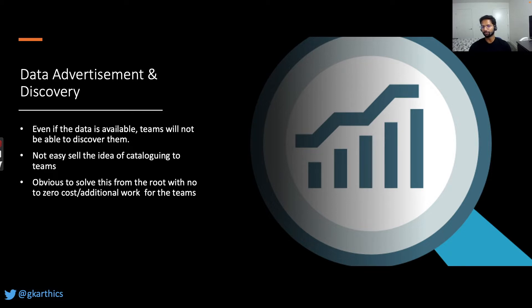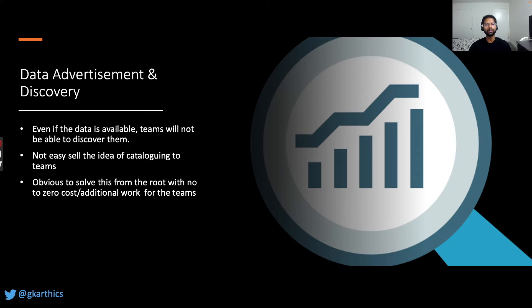Even if data is available, teams will not be able to discover it because there is no centralized data cataloging solution. To make data discoverable, there needs to be some effort on advertisement of data. If data is bought by one team and the same dataset is needed by another, there is no way for team B to know about its availability. Teams are not to blame — their tight deadlines and time-to-market are more crucial than extra chores. So achieving a central data cataloging solution must come with zero additional effort to the teams.